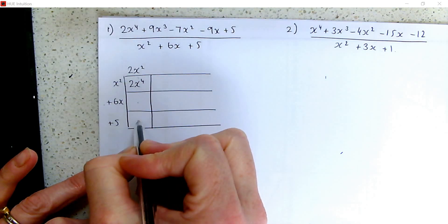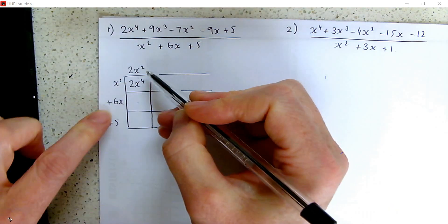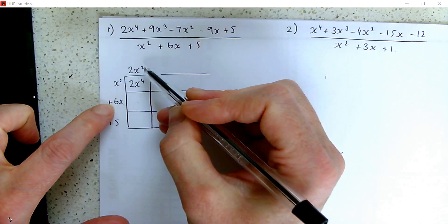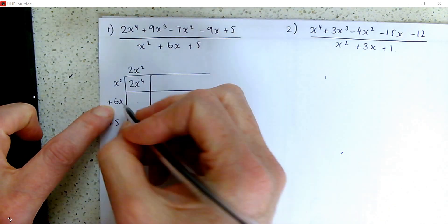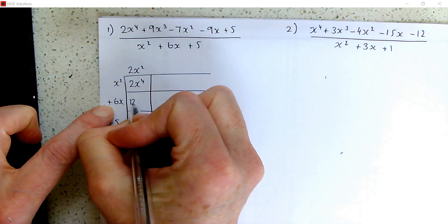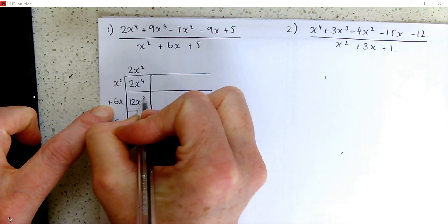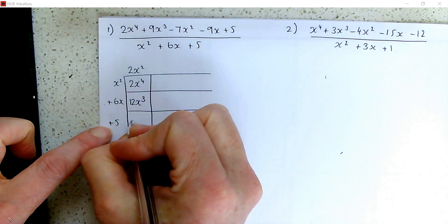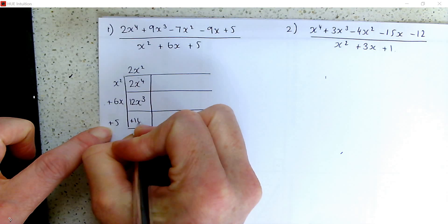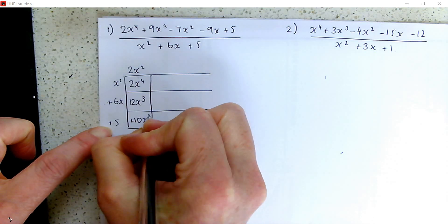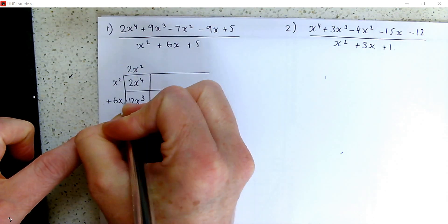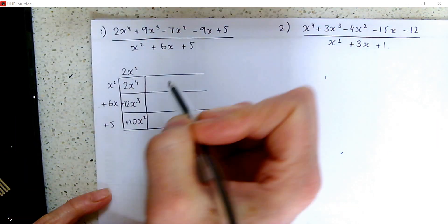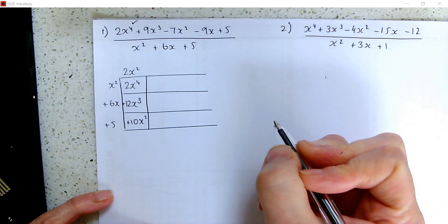To fill in these boxes, we multiply the outside. So we've got 2x squared times 6x, and we've got 2x squared times 5. So we have dealt with the 2x to the 4.